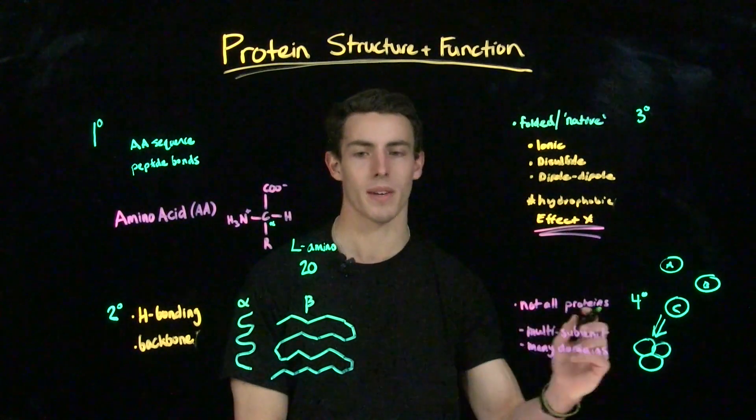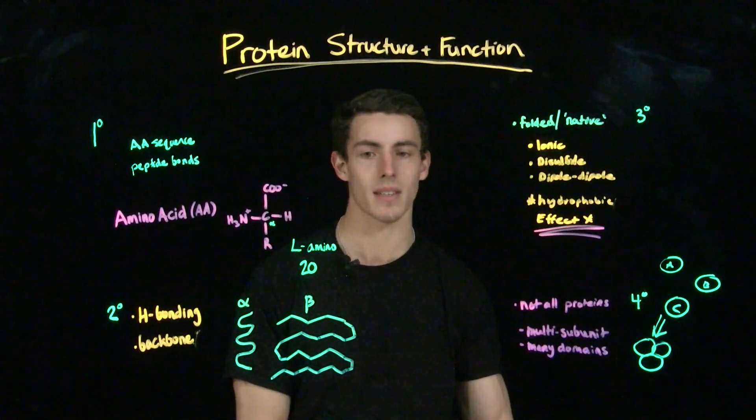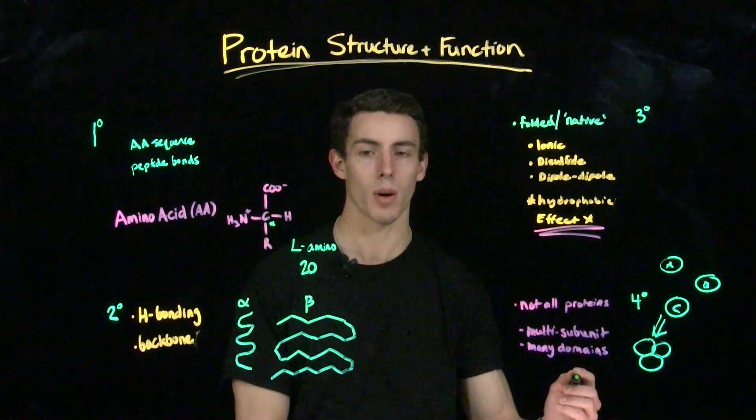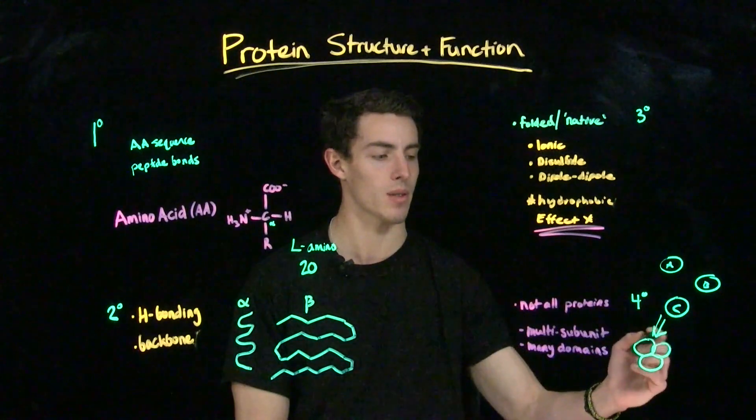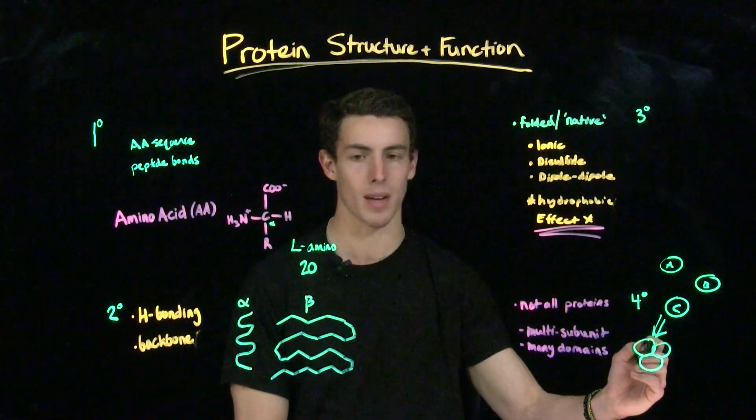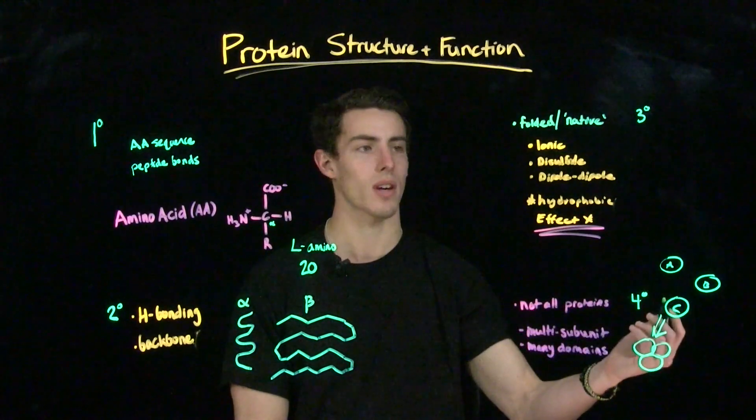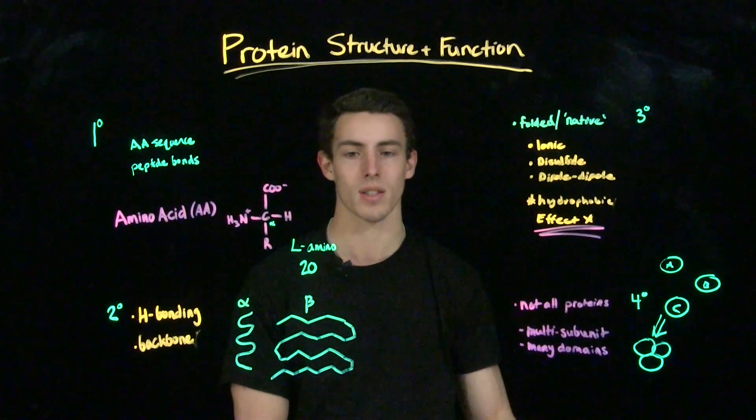The final level of protein structure is quaternary structure. Quaternary structure doesn't exist in all proteins, but it does exist in proteins that are multi-subunit or have many domains. In a quaternary protein, multiple different tertiary proteins come together to form one large multi-domain protein. The driving forces behind this are many of the same as tertiary structure: ionic, disulfide, dipole-dipole, and hydrophobic interactions.